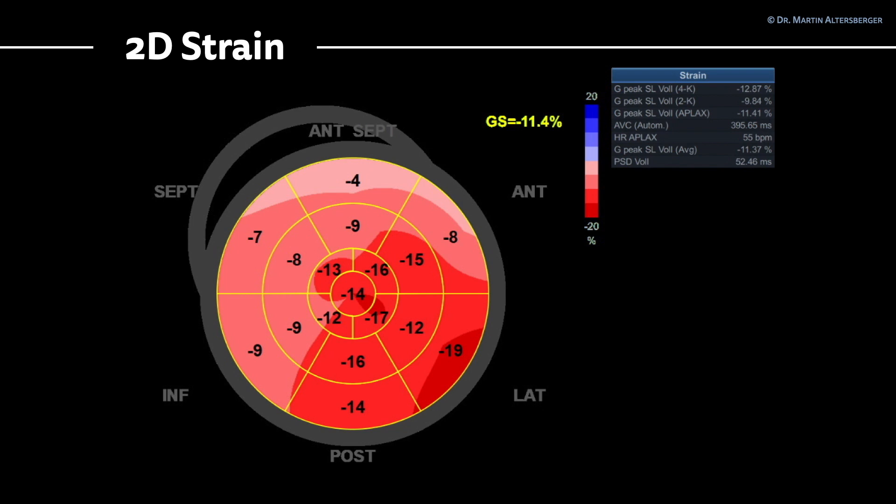You can see some regional patterns: septal and inferior regions show less contraction, while lateral and posterior regions show more contraction. The dark red indicates normal longitudinal contraction, and the lighter the color, the less longitudinal contraction is present.